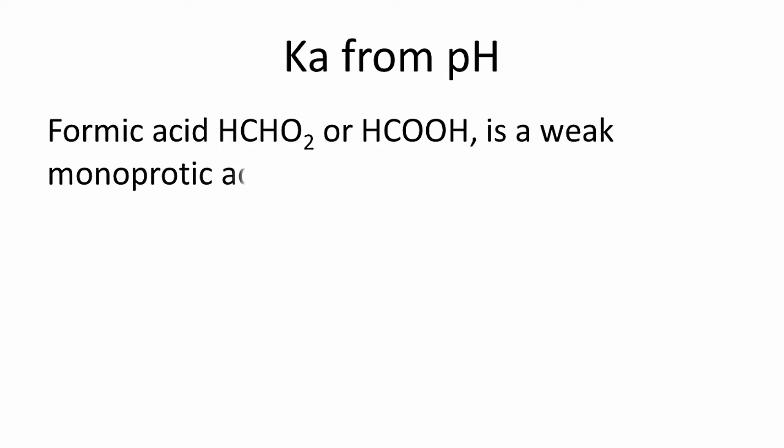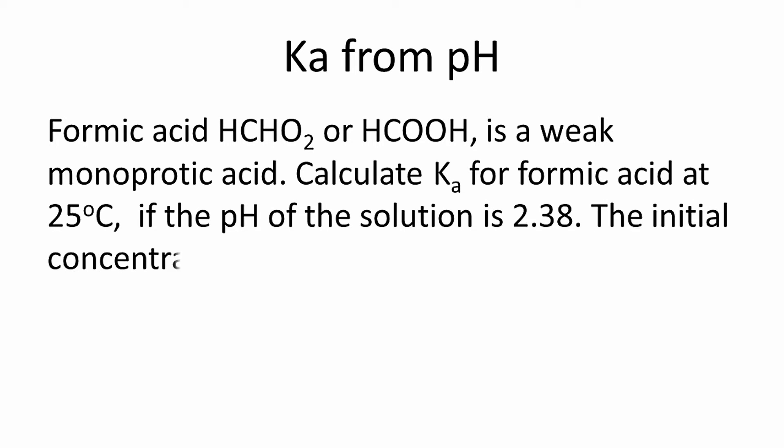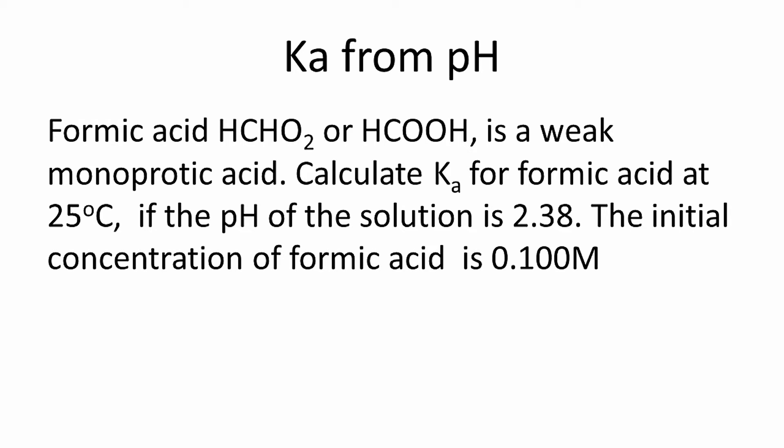Formic acid, with formula HCOOH or HCHO2, is a weak monoprotic acid. Calculate Ka for formic acid at 25 degrees Celsius if the pH of the solution is 2.38 and the initial concentration of formic acid is 0.100 moles per liter.